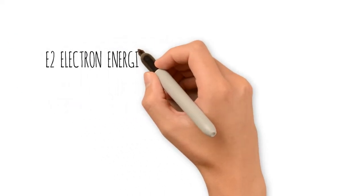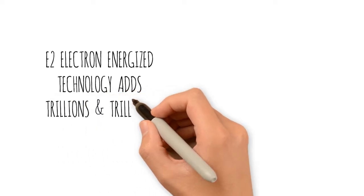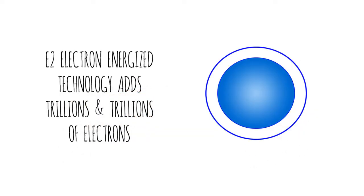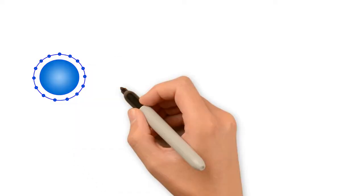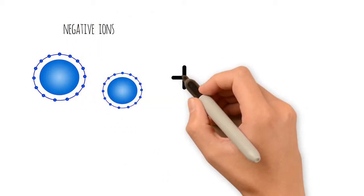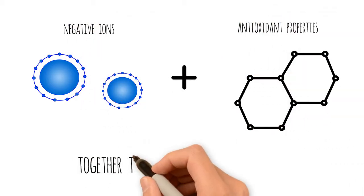But it doesn't have to be that way. The E2 Electron Energized Technology adds trillions of electrons, resulting in stable negative ionization. These negative ions act with antioxidant properties to neutralize free radicals.